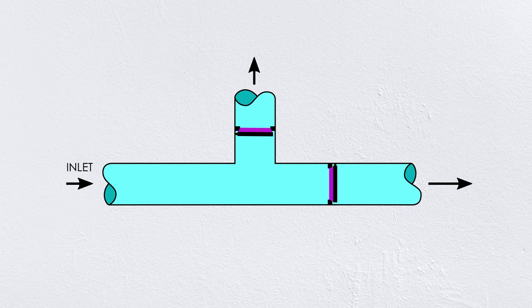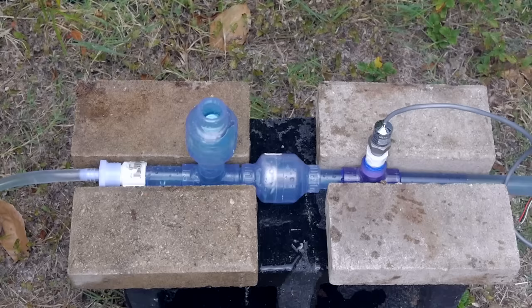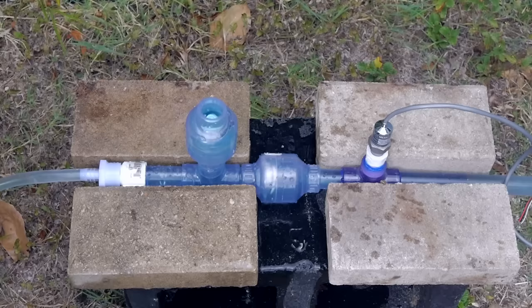A ram pump is essentially just two one-way check valves. One called the waste valve, and the other called the delivery valve. To get it started, you just momentarily open the waste valve to allow water to flow. After that, it's working on its own to pump the water uphill above the elevation of the source.